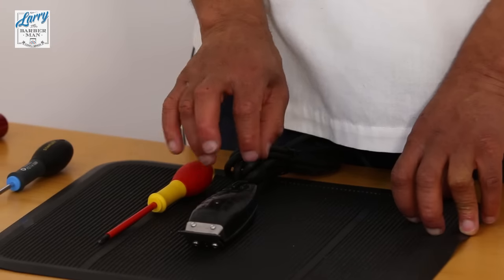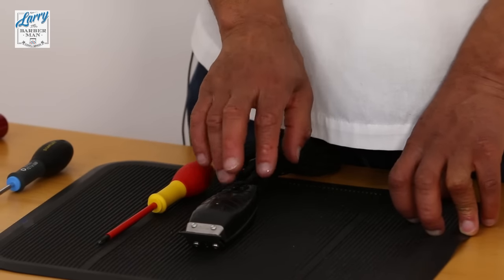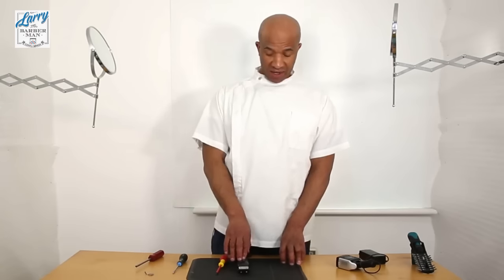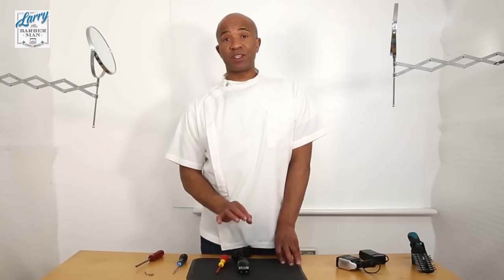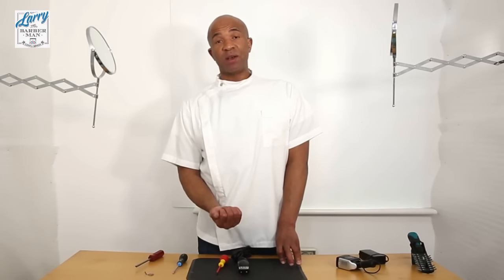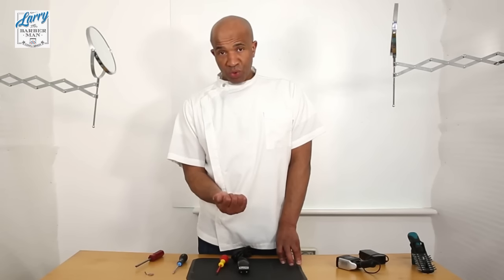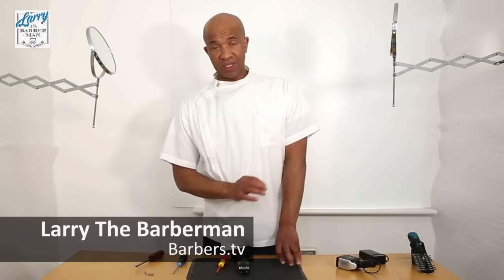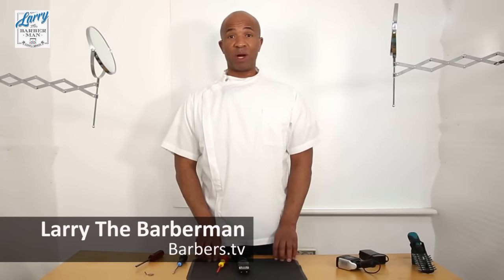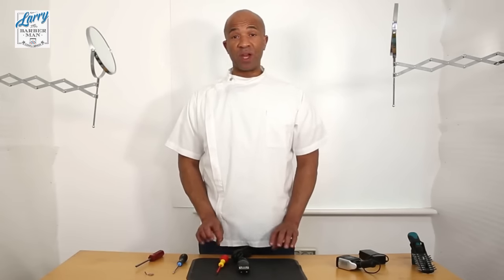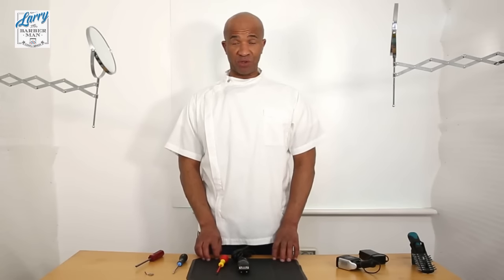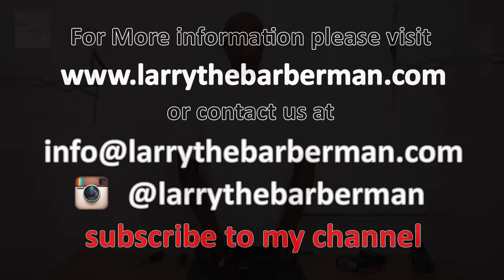And you're all set. That is how you replace the tension spring on a T-Outliner or a GTX. And like I said once you've replaced the spring it's just a trial and error process making that half moon either bigger or smaller until it hits exactly where you want it to hit. So that's another demonstration by Larry the barber man. Hope you found it helpful. If you did please subscribe to my YouTube channel. Thank you.